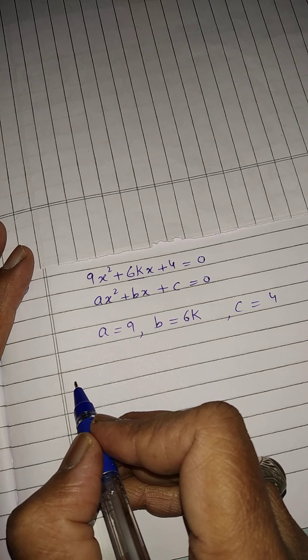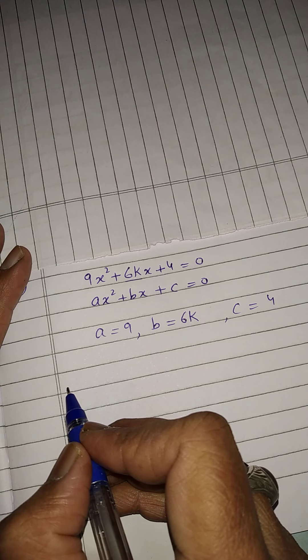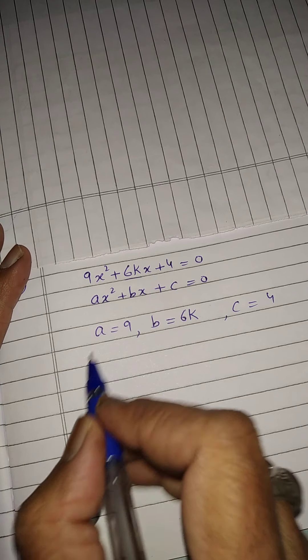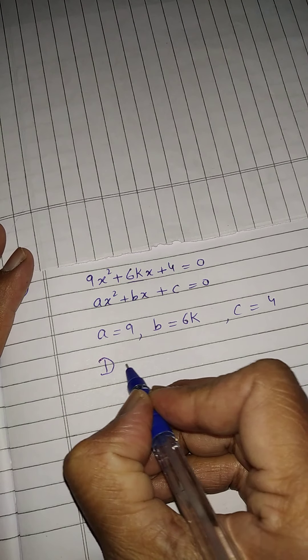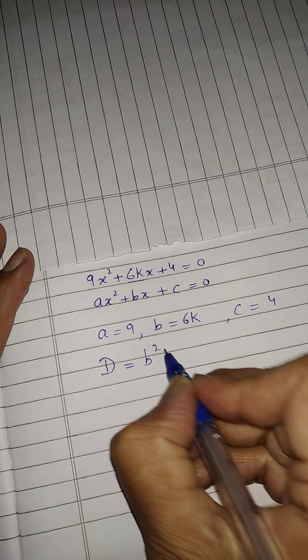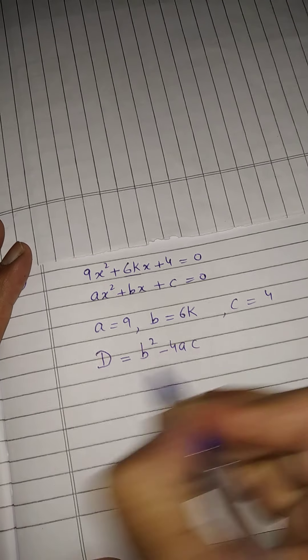Now, we will calculate discriminant whenever they are talking about the nature of the roots. So, we will first calculate D, D means discriminant. Its formula is B square minus 4AC.